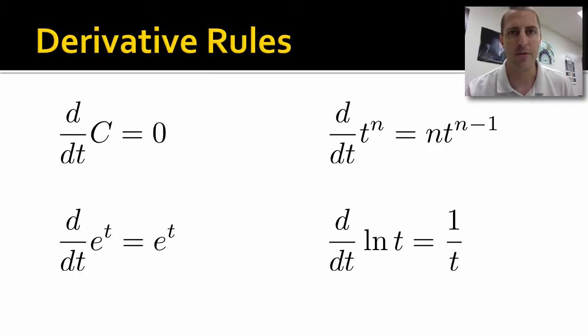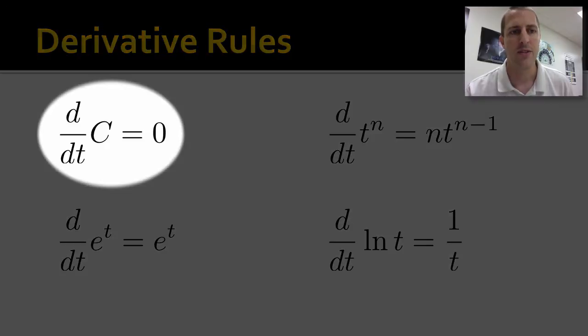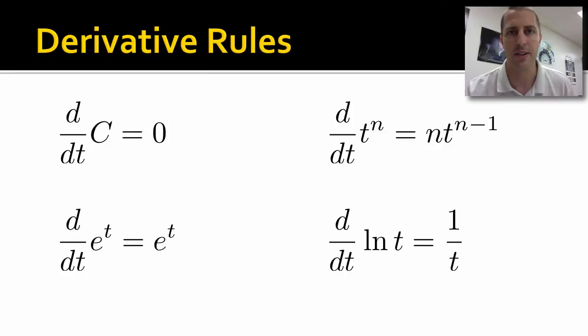There's a few rules we need to follow to find derivatives. These are shortcuts. You'll learn harder ways in calculus, but these are shortcuts. First one: derivative of a constant is always zero. Piece of cake. Doesn't matter what the constant is.